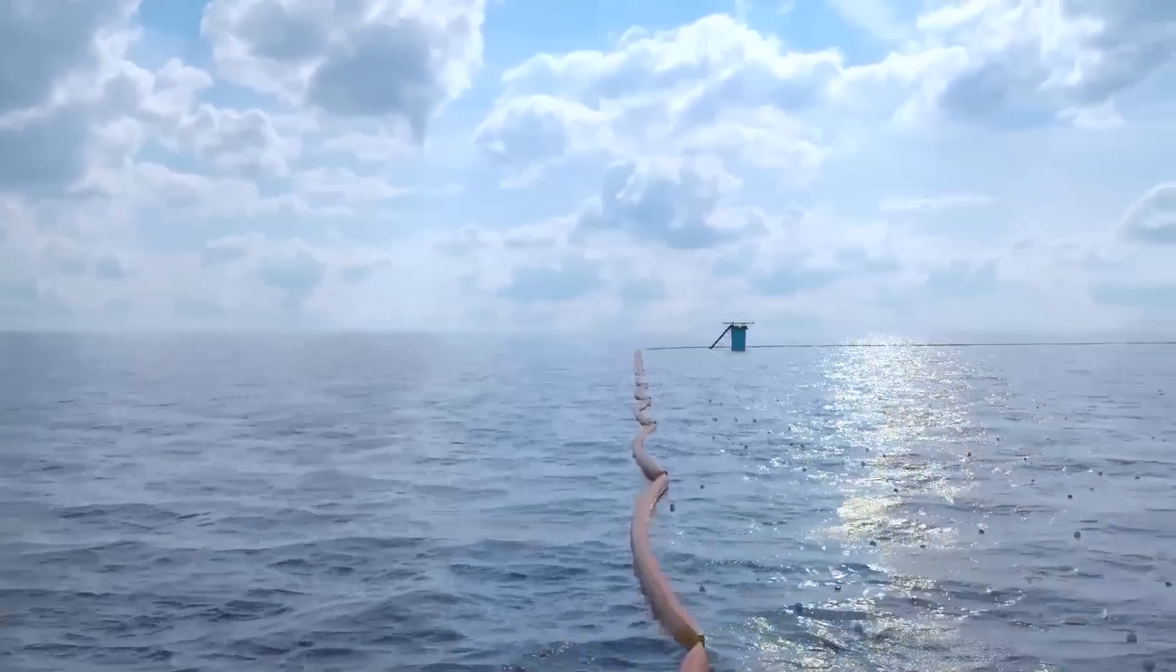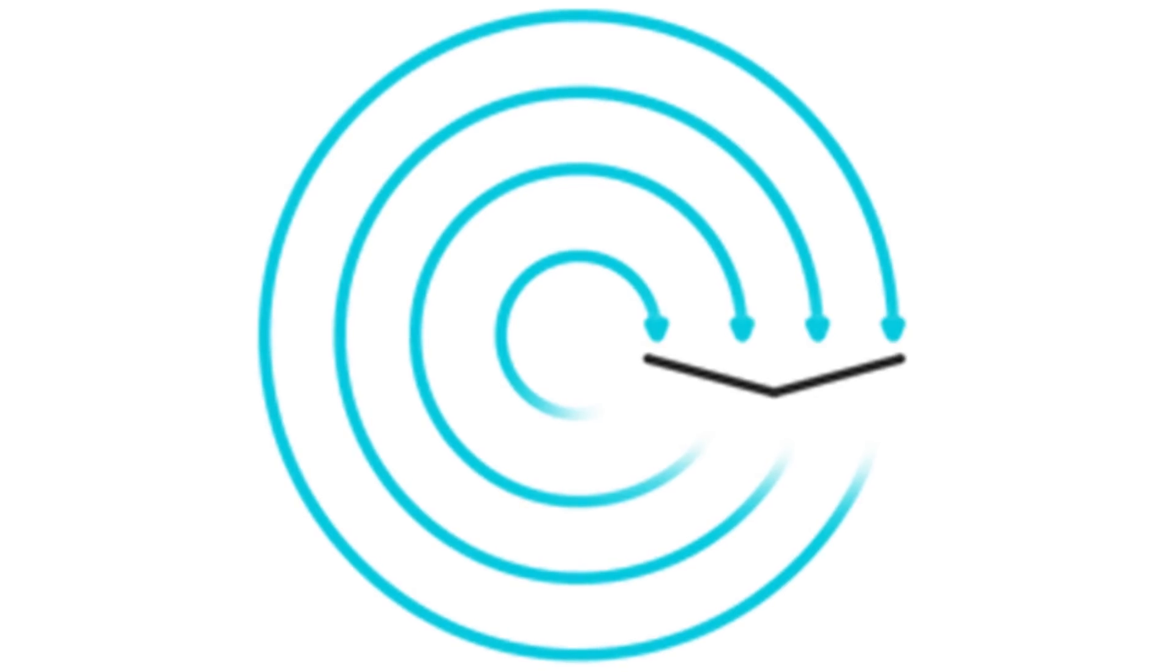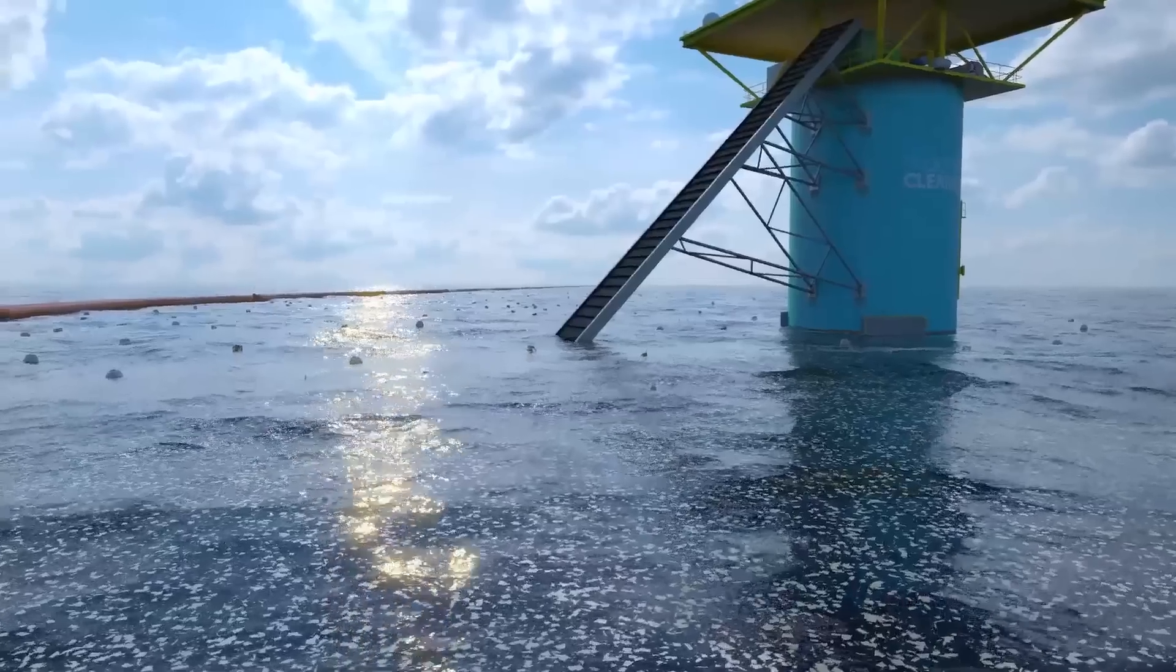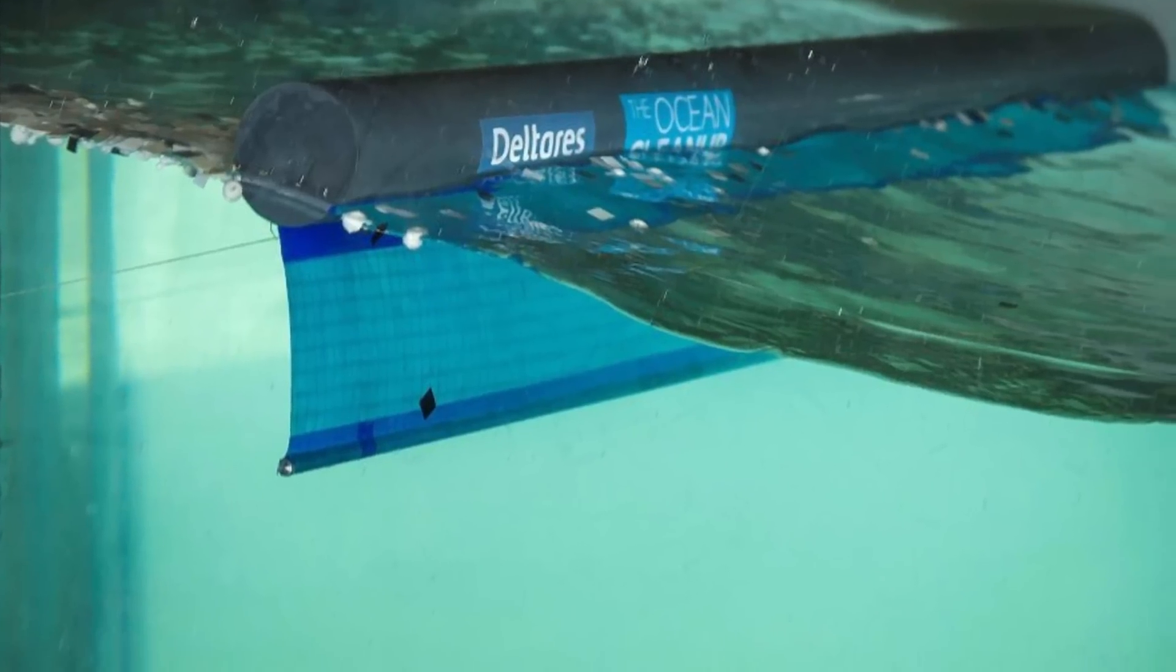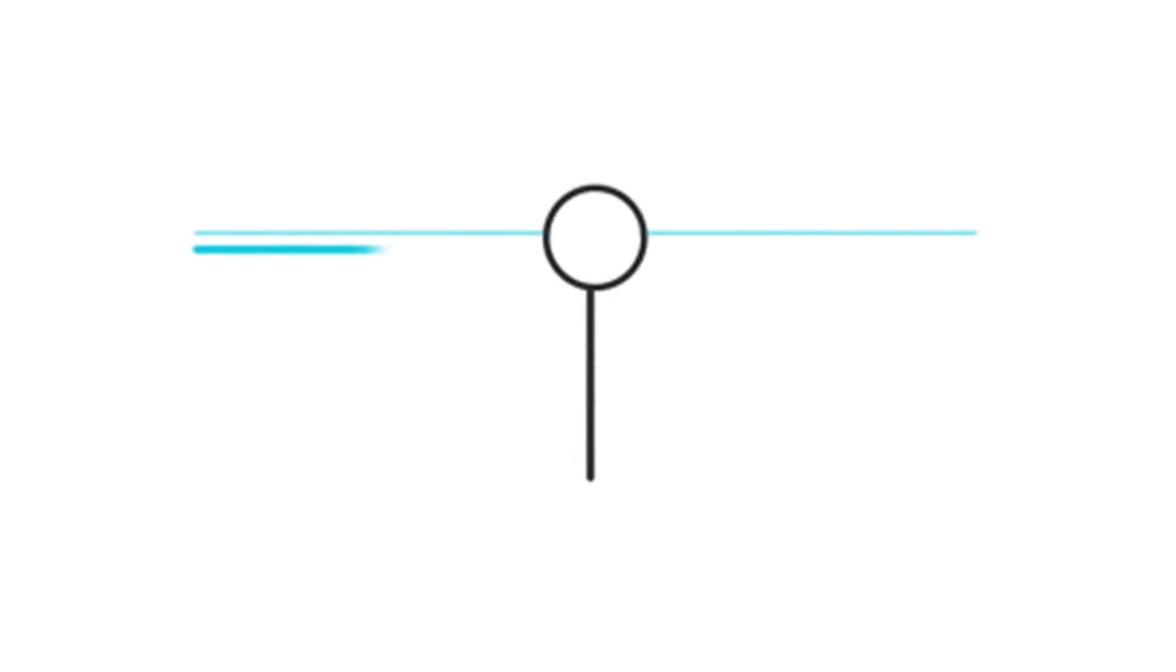These scalable barriers use passive technology to collect plastic at low cost and energy. The structures are powered by currents that funnel the plastic to the center where it can be extracted. Screens beneath these barriers will allow water to pass underneath, carrying all sea life while capturing the less dense plastic.